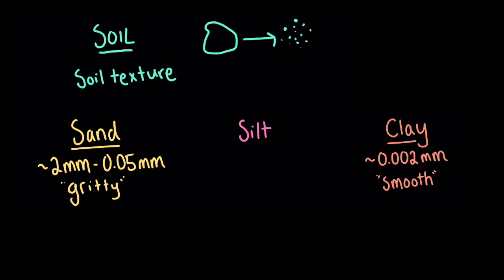Most people are familiar with sandy soils and clay soils, but silt is right in between. It's made up of particles between the sizes of clay and sand, so it's between 0.05 millimeters and 0.002 millimeters.